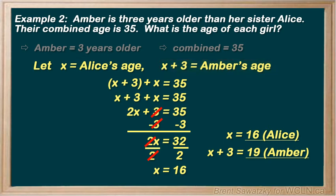Amber is indeed 3 years older than Alice, 16 versus 19. And if we add 16 and 19, we get 35. So, confirmed.